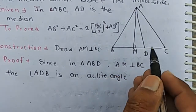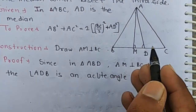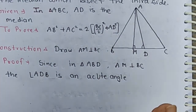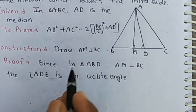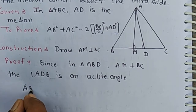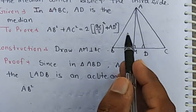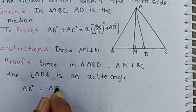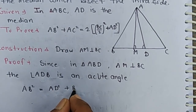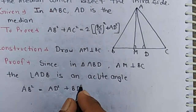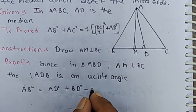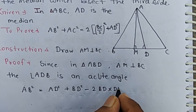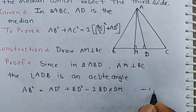Since angle ADB is an acute angle, by the acute angle triangle theorem we have: AB² = AD² + BD² − 2·BD·DM. This is equation number 1.